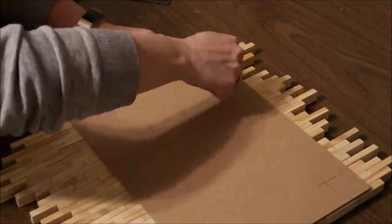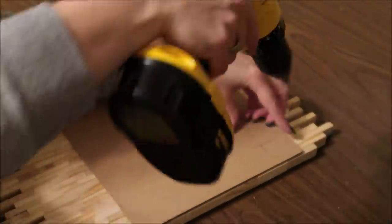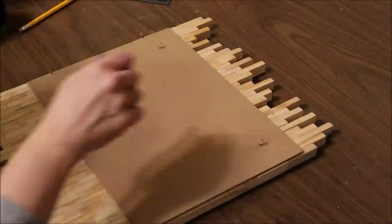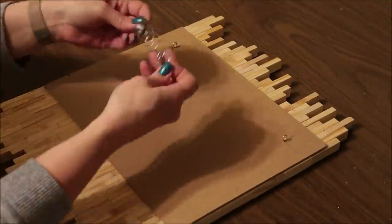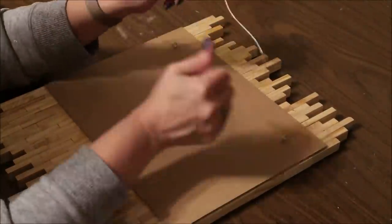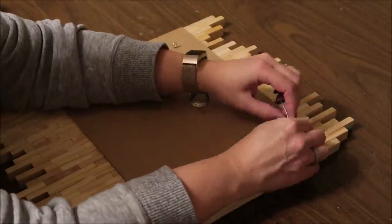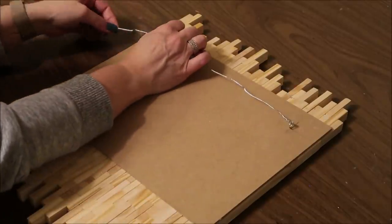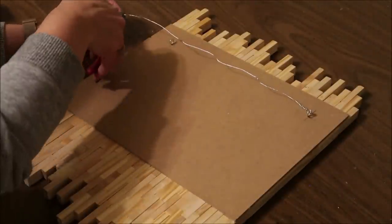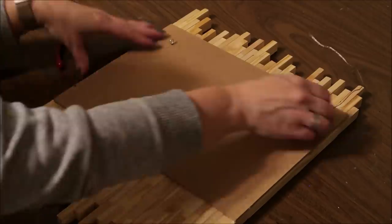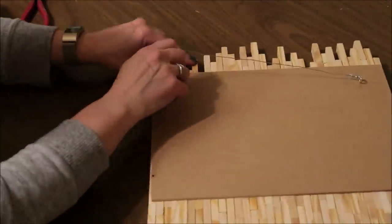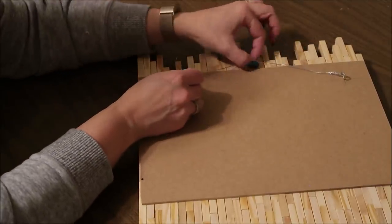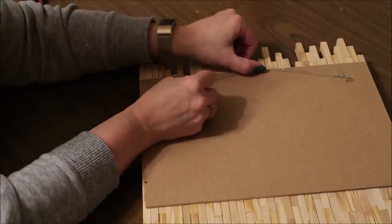Then I'm just going to take that picture hanging wire and tie it to one of the screws and stretch it across and tie it to the other screw. And once again, I'm making sure that it's not too long so that it won't show up above the top of my blocks.